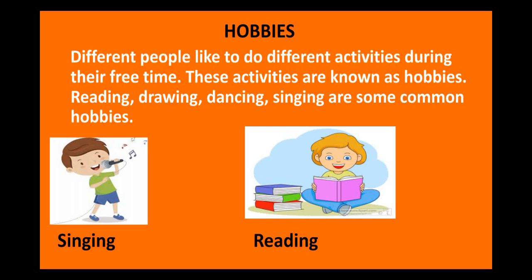Let us revise all the topics we have done. We started by introducing ourselves — telling each other more about ourselves. Then we learnt about likes and dislikes: we all are very different from each other, we like different things, and sometimes we may not like certain things — that is our likes and dislikes, and that makes us special. Then we learnt about hobbies: a hobby is basically the activity you like to do in your free time. Some hobbies include reading, drawing, dancing, and singing.